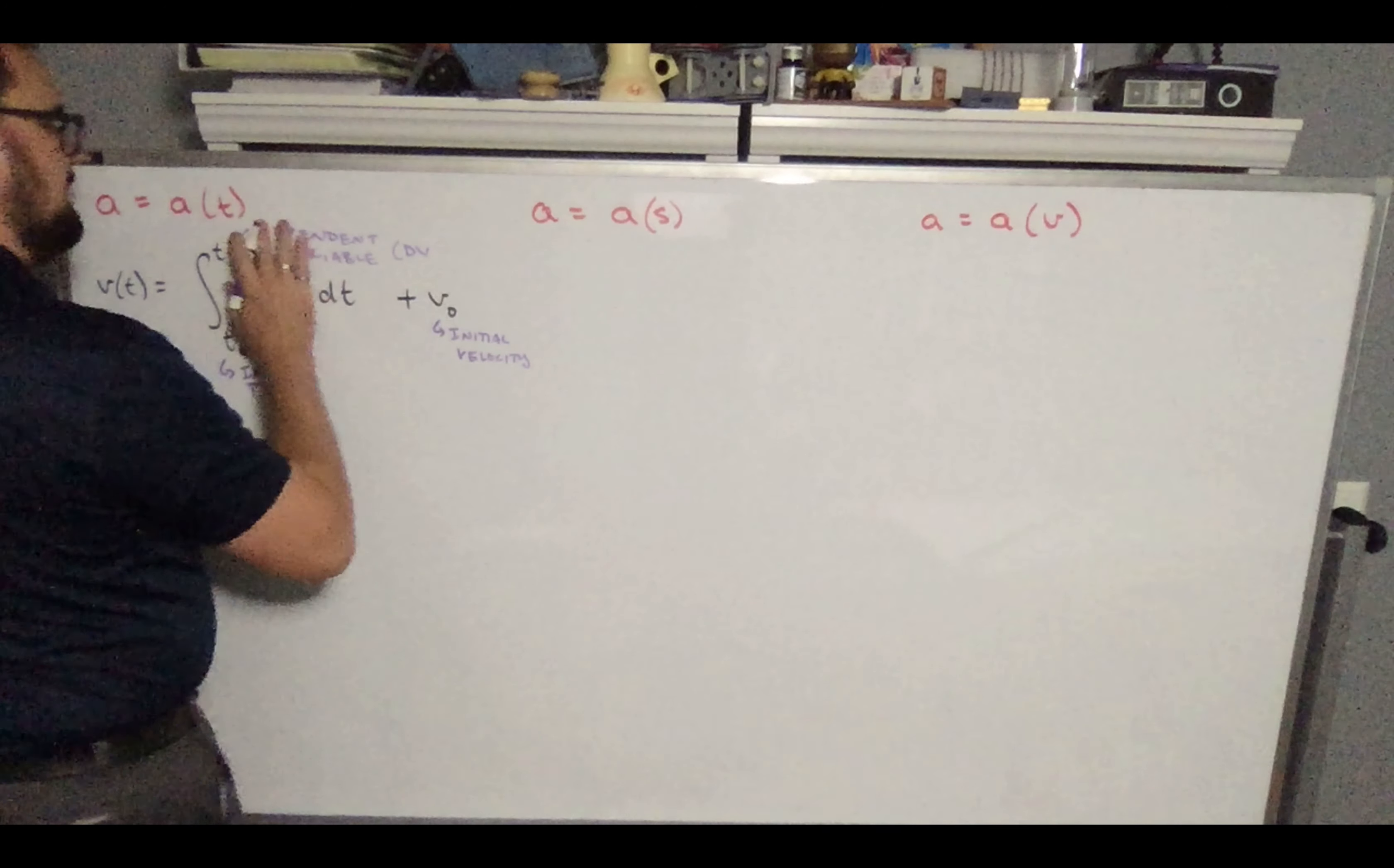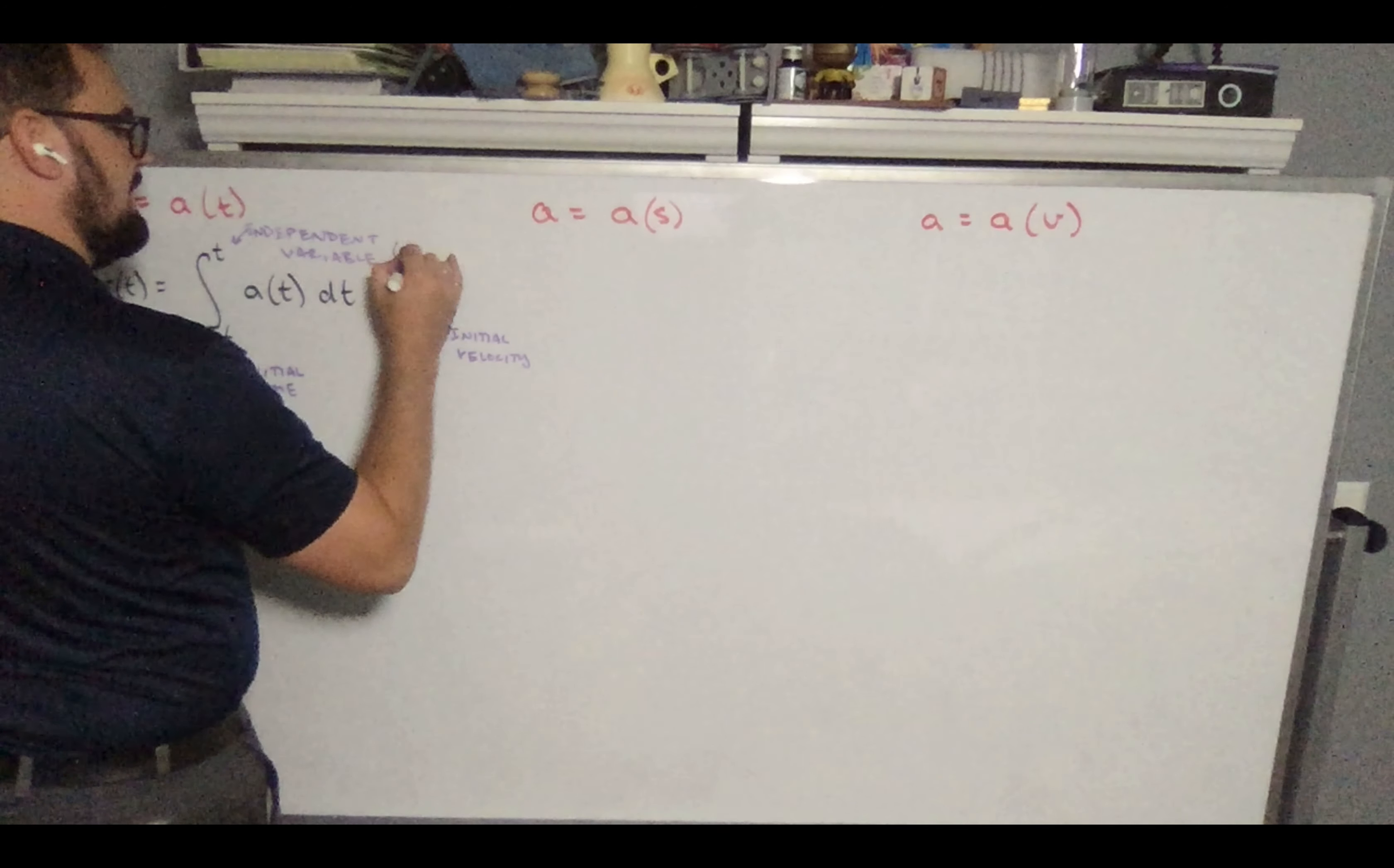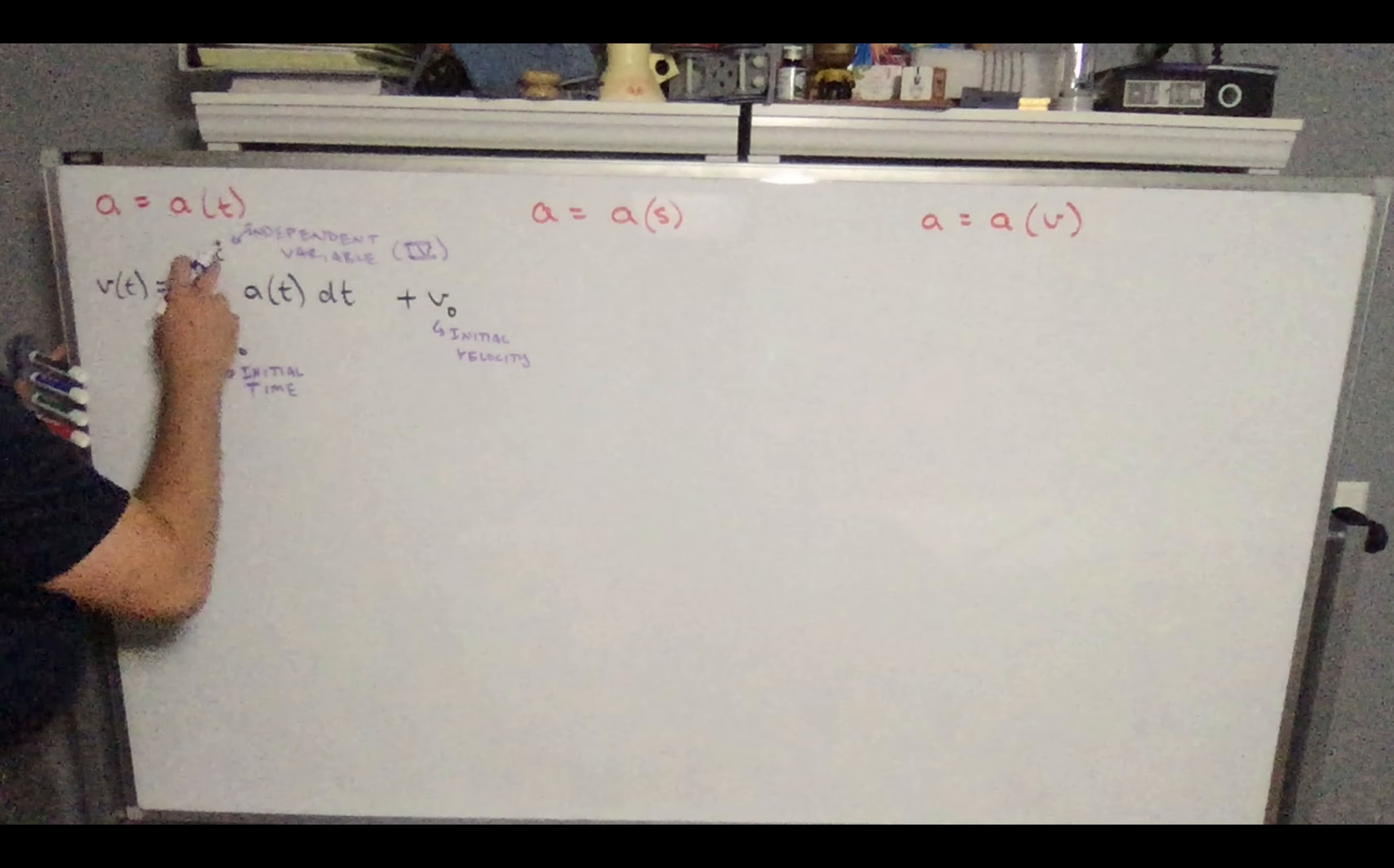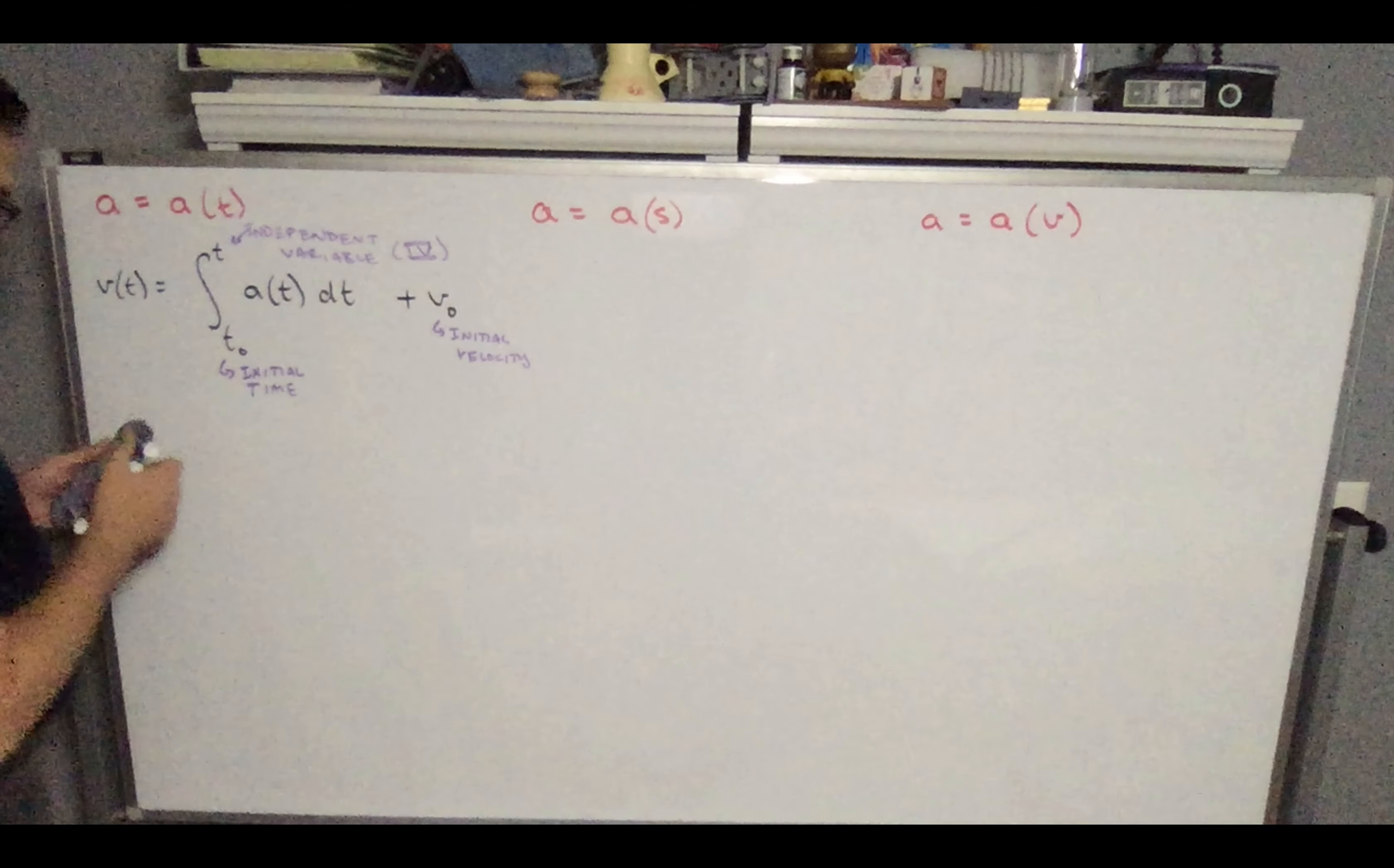Often that initial time is zero, but it certainly doesn't have to be. This is going to be our initial velocity. So initial time, initial velocity. That's what the little O means is initial. This guy is our independent variable, which I will abbreviate to IV.